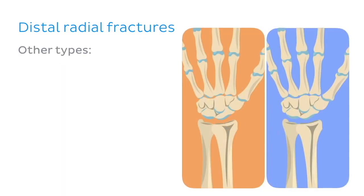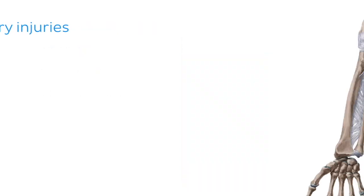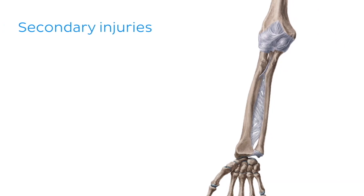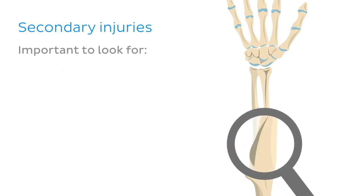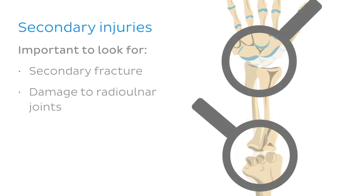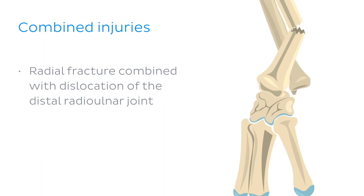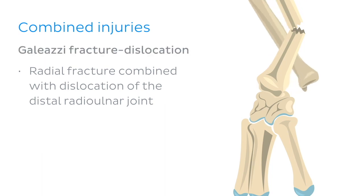Other types of distal radial fracture include Barton's fracture and Chauffeur fracture. As the radius and ulna are tightly bound together by the interosseous membrane, it is important to look for a secondary fracture or damage to one of the radio-ulnar joints when a primary fracture to the radius or ulna is observed. A radial fracture combined with a dislocation of the distal radio-ulnar joint is called a Galeazzi fracture-dislocation.